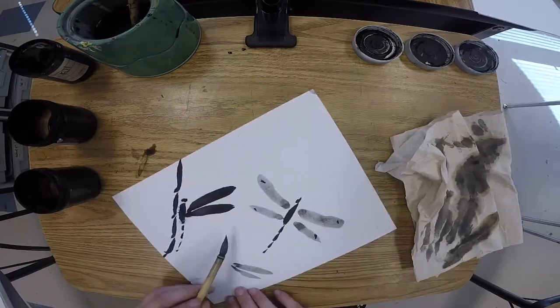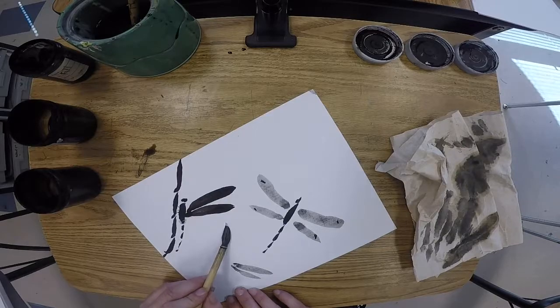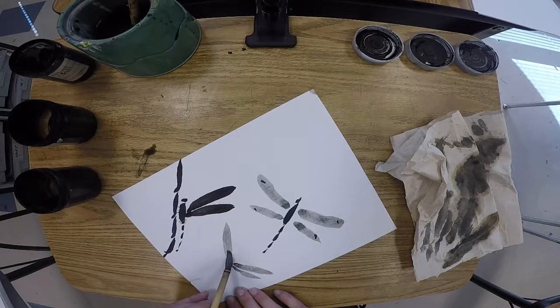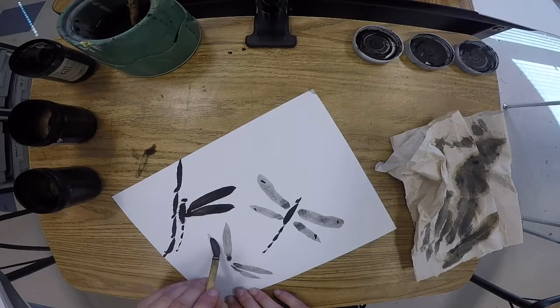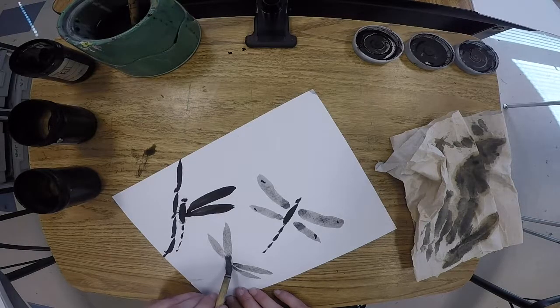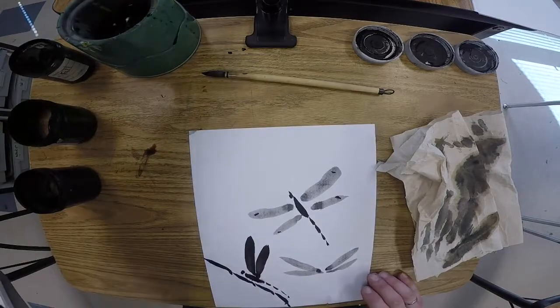This one we're gonna have at a different angle. The wings on this side I want to be a little bit longer, because that side is gonna be closer to us. And when something is closer to us, we draw it bigger.